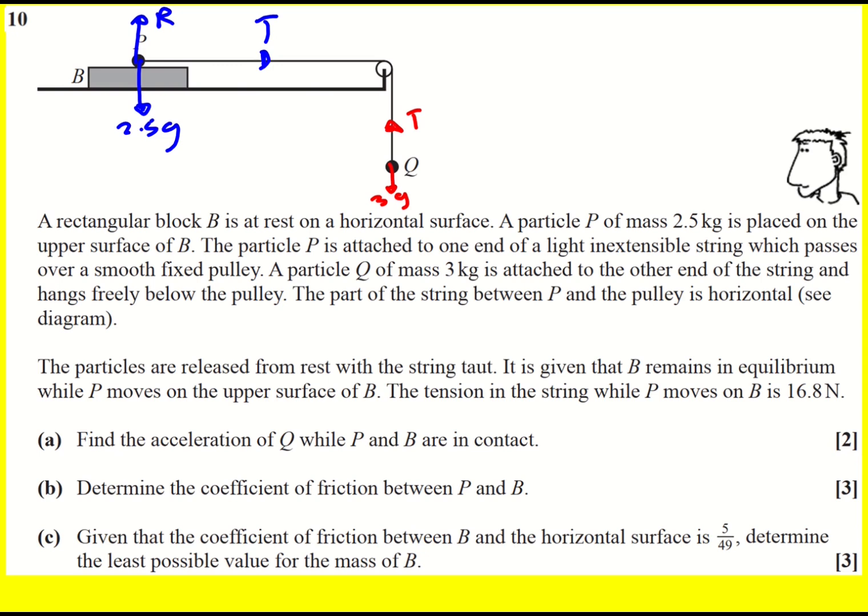So the particles are released from rest with the string taut and it's given that B remains in equilibrium. So B is not going to be moving anywhere. While P moves across B and the tension in the string is 16.8.